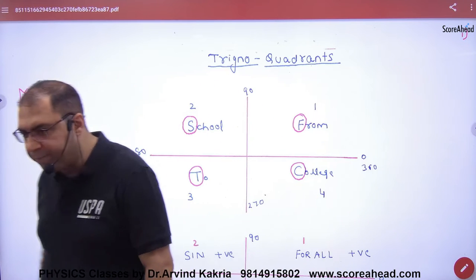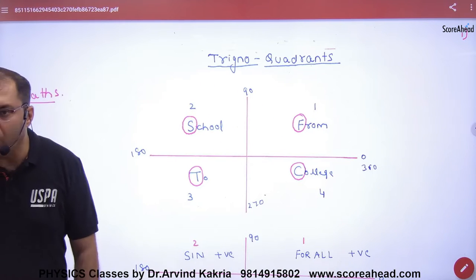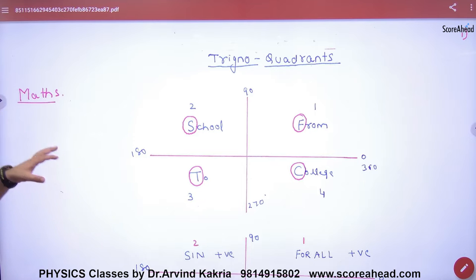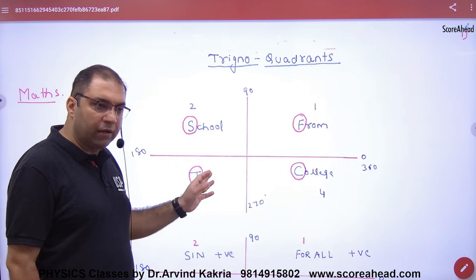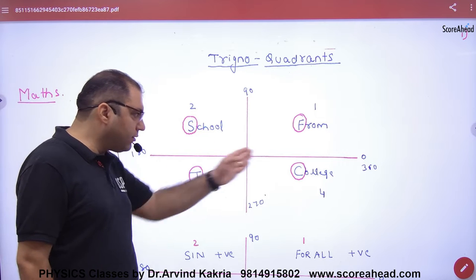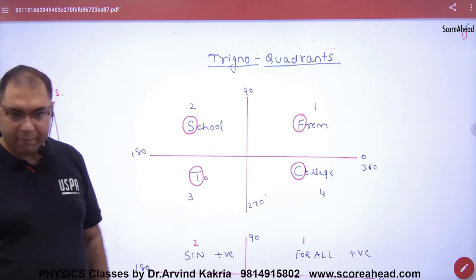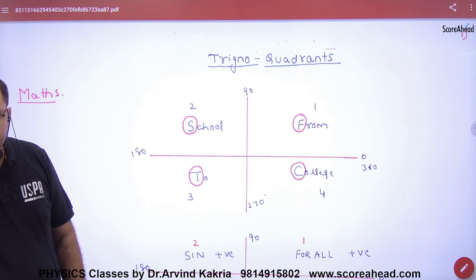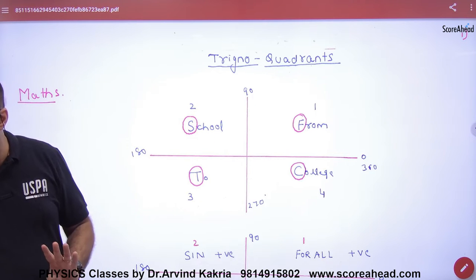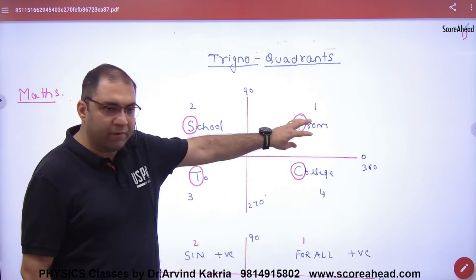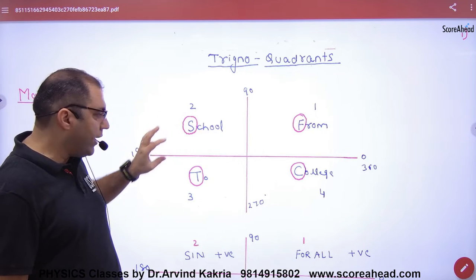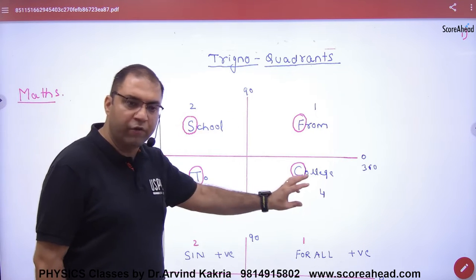In the trigonometry coordinates, we draw two perpendicular lines and divide the plane into 4 parts. This gives us coordinate quadrant number 1, 2, 3, and 4.